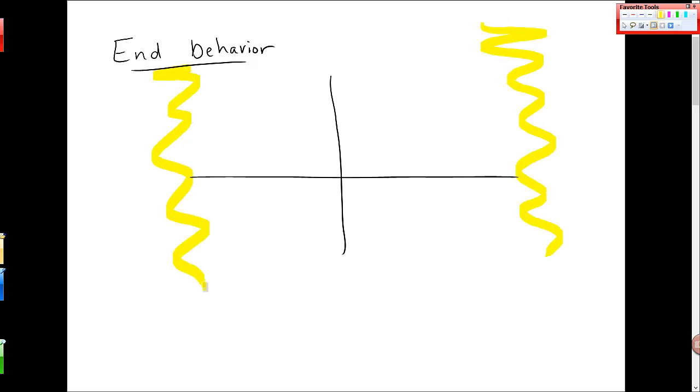Okay, so one thing we want to talk about is end behavior. There are kind of these places on the graphs I want to show you. Like, this is what a normal graph looks like.